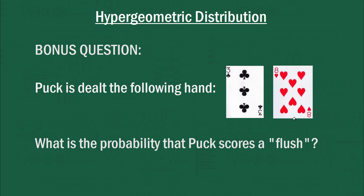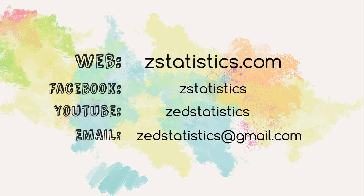That's about it, but I've left you with a bonus question. I was keen to see whether that's significantly higher than another hand where you have offsuit cards. So let's say Puck is dealt a three of clubs and an eight of hearts — what's the probability that Puck scores a flush? Assuming Puck can't see Poz's cards, this is the probability as it appears to Puck. I'll put my answer at the bottom of the description so you can check if we get the same answer. Thanks for watching, and here are some links if you want to keep in touch or suggest other videos.